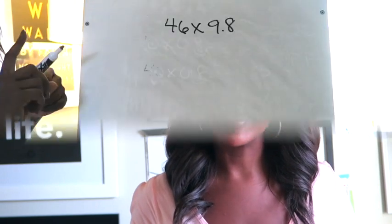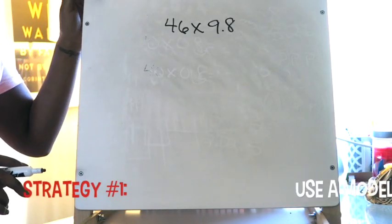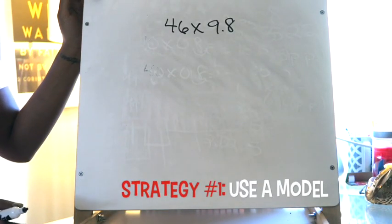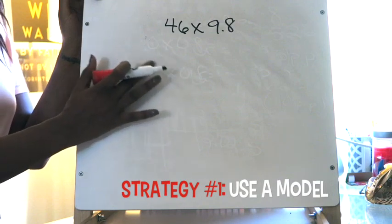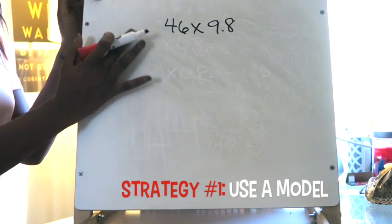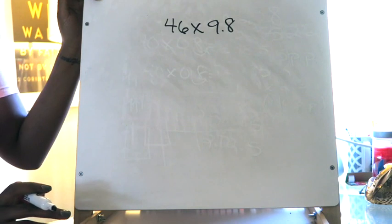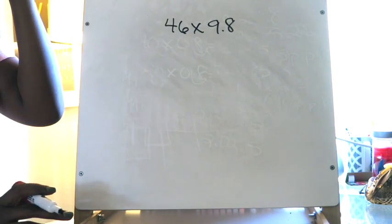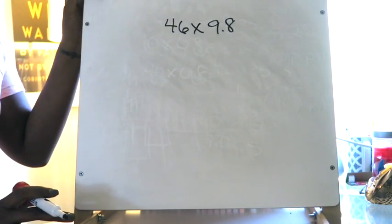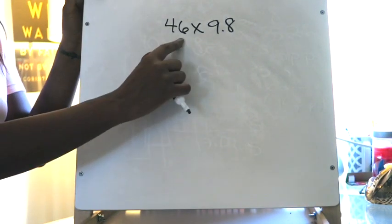I'm going to give you a couple of examples in this lesson and then come back with some closing thoughts and tips. In this lesson we're going to be multiplying using expanded form and I'm going to give you two strategies. The first strategy we're going to use is a model, and before you draw out the model the first thing you want to do is take your two factors.